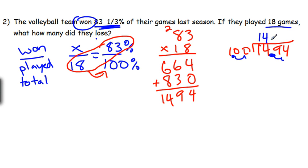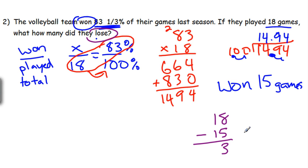I'm just going to move the decimal over two places, so 1,494 becomes 14.94. This represents the games they won: 14.94 games. We dropped a third of a percent so our number is a little bit lower. If we round this up to the nearest whole number, they won 15 games. If they played 18 games and won 15, how many did they lose? 18 minus 15 equals 3 games lost.